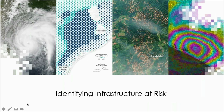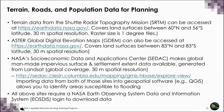Now we'll discuss identifying infrastructure at risk. There are different sites where you can pull relevant information, for example elevation maps from SRTM or ASTER DEM, as well as socioeconomic data. The CDEC website has products on man-made impervious surface and settlement extent, generated from Landsat and available at 30 meters spatial resolution globally. You can download these data for free with an account. You can then import this data into QGIS to identify areas that are susceptible to flooding.